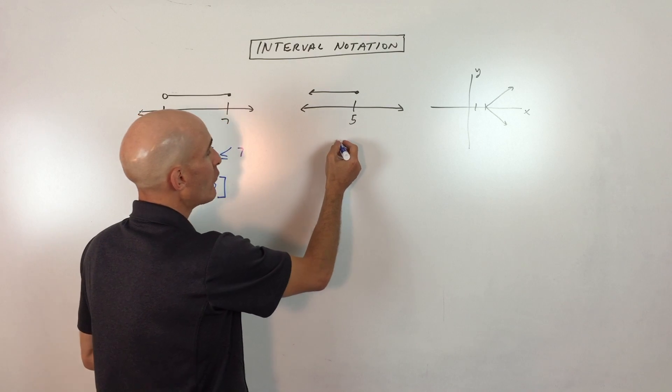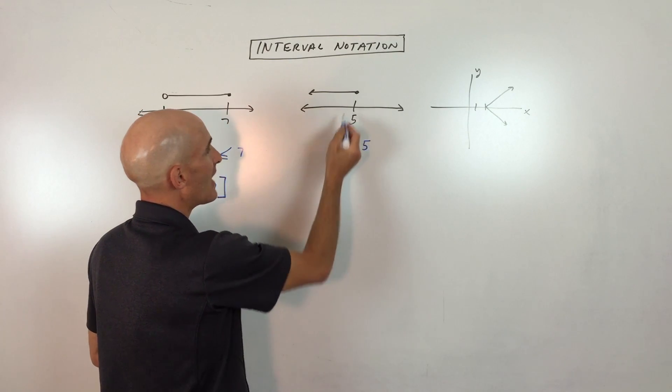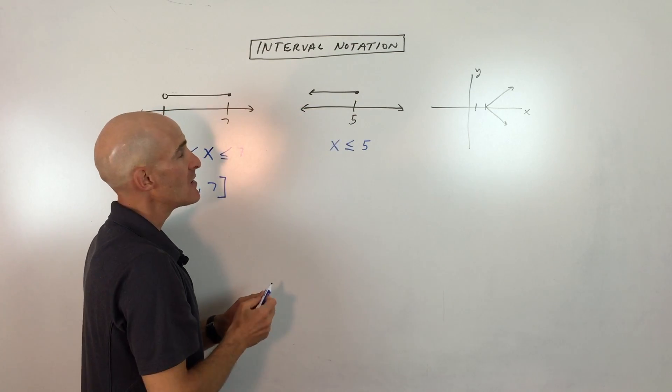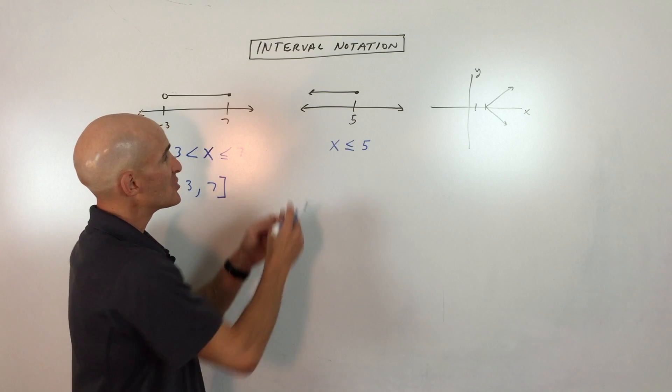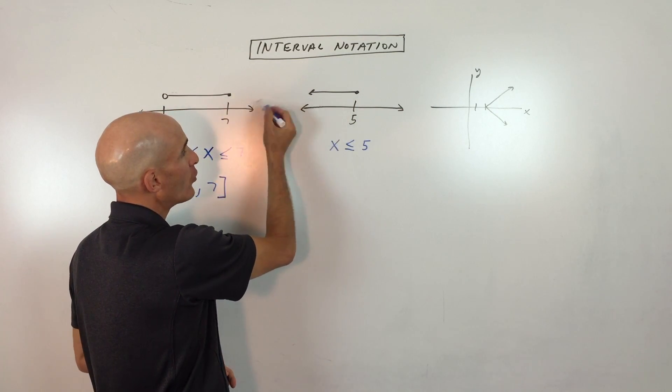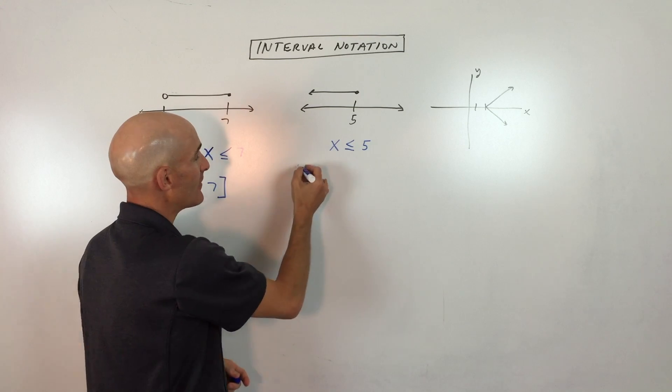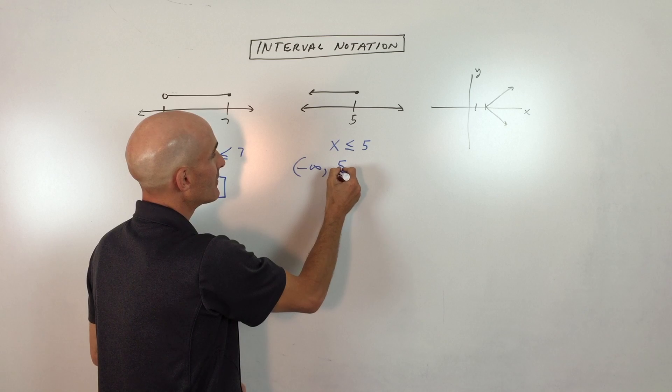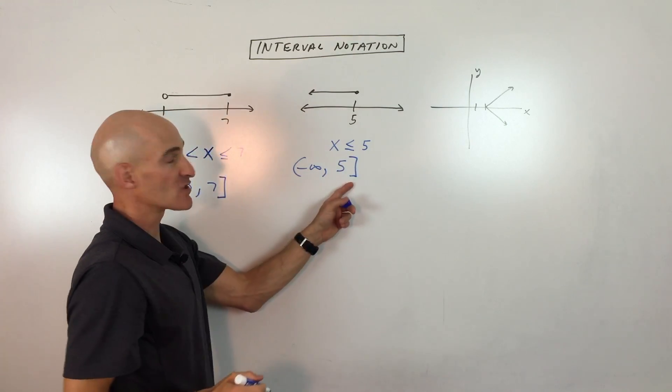This one here before, we would have said x is less than or equal to 5. Equal to because it includes that point, less than because you're shading to the left. But when you're working with interval notation, you think about going from left to right or low to high, and you can see this goes all the way to negative infinity. So negative infinity all the way up to 5, including 5, so we'll use a square bracket.